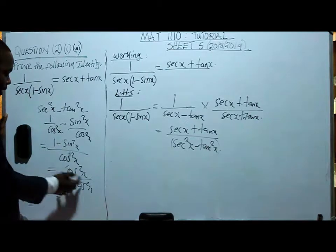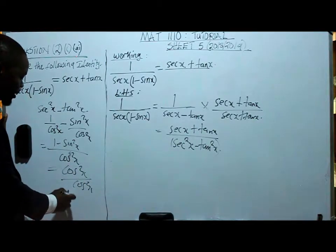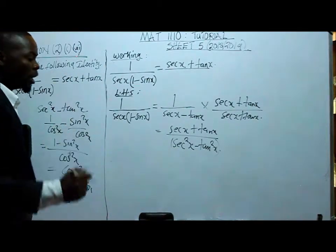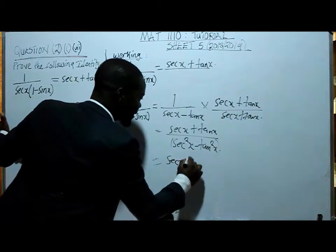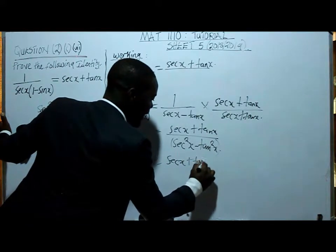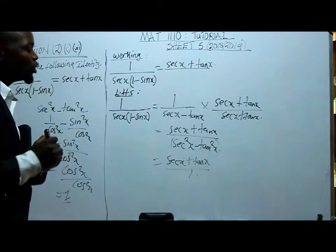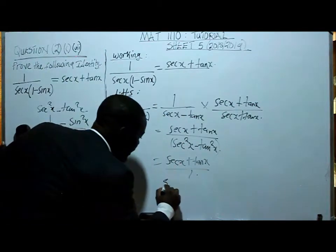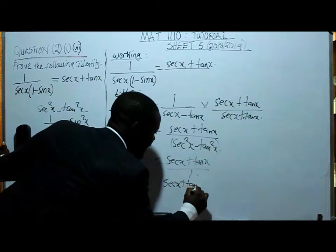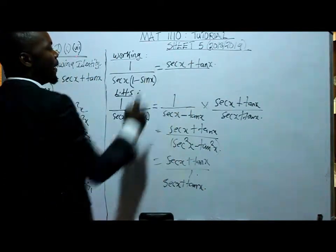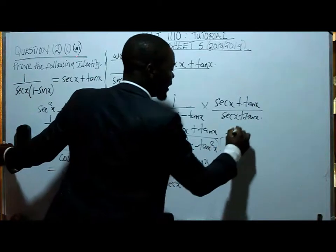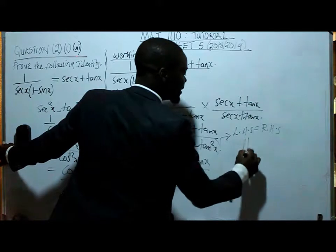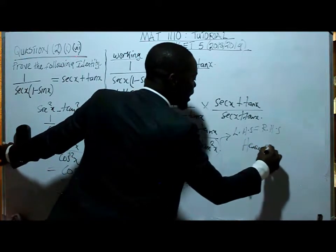Because cos squared x divided by cos squared x is one. So that means our denominator here is just one. So we're going to say we have got sec x plus tan x divided by one. One divided into the numerator is sec x plus tan x, which is our right hand side. So from here, we can say the left hand side is equal to the right hand side. Hence proved.